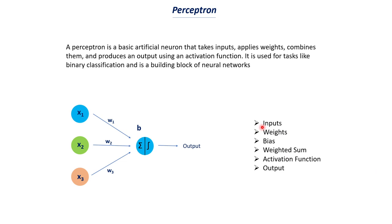Inputs are nothing but the input features. We have x1, x2, and x3 as examples. Let's say we are working on a binary classification problem where we have to say whether a person is diabetic or not. In that case, input features could be the age of a person, their blood pressure, whether they have other diseases, and so on. So x1 could be age, x2 could be blood pressure, and so on. This is what we call inputs or input features.